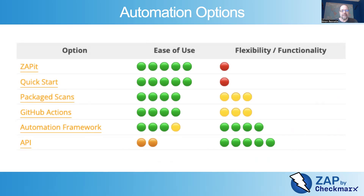Then we have a quick start option — again, very easy to use, but like Zap It it is very limited in functionality and not very flexible. We have a set of package scans that run within Docker with a limited but quite thorough set of functionality — so reasonably flexible with reasonable functionality. We also have a set of GitHub Actions which are based on the package scans, so again quite easy to use and relatively flexible. But if you want to do a lot of automation or more complex automation, the best option is probably the automation framework, which is relatively easy to use, well documented, and incredibly flexible. And if you want the maximum amount of flexibility, we've got an API — a little more complex since you need to understand what Zap is doing behind the scenes, but very flexible and gives you access to nearly all of Zap's functionality.